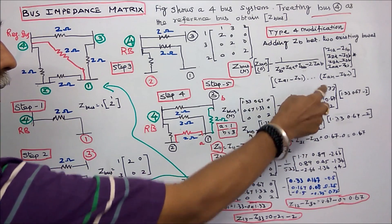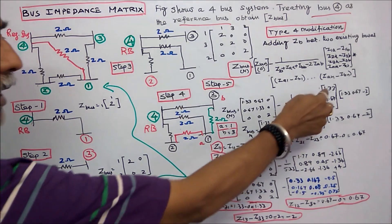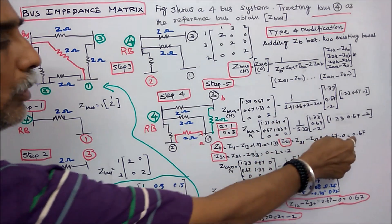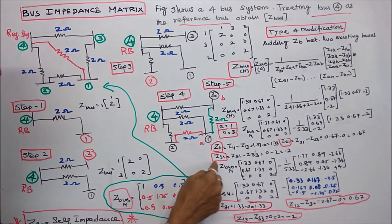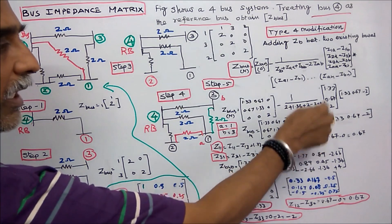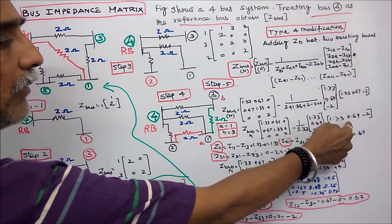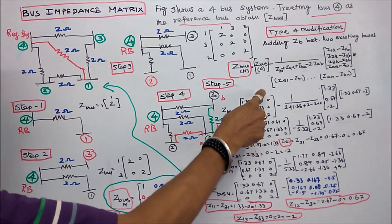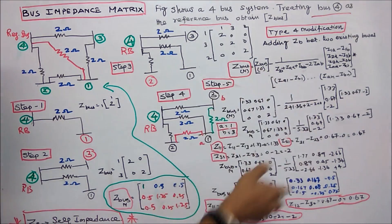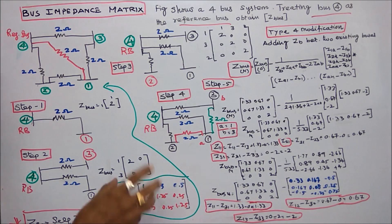This here, Z11 is equal to 1.33, Z21 is equal to 0.67, Z31 is equal to minus 2. Transpose: 1.33, 0.67, minus 2. This is the old bus matrix. After simplifying this matrix, you will got a 3 by 3 matrix.